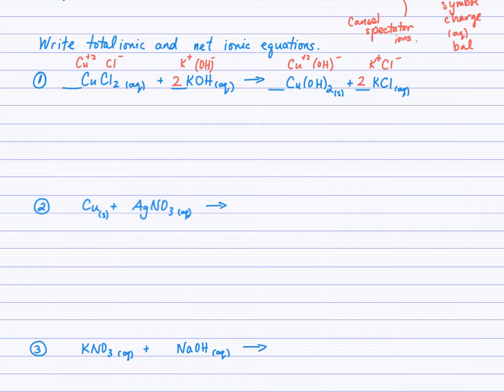For example one, I wrote in red as rough work the ions — the symbols and charges of the ions in the reactants. I switched partners to determine the products, crossed charges down, and found the formulas Cu(OH)₂ and KCl. Checking the solubility guidelines, copper 2 hydroxide is a precipitate and potassium chloride is aqueous. Then I balanced the equation.